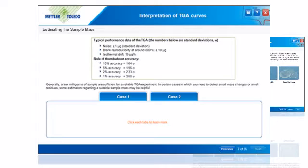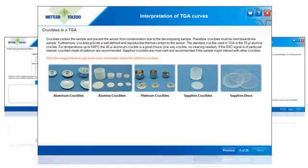The second unit explains the procedure for estimating the sample mass using two cases and lists the different types of crucibles and gases in a TGA.